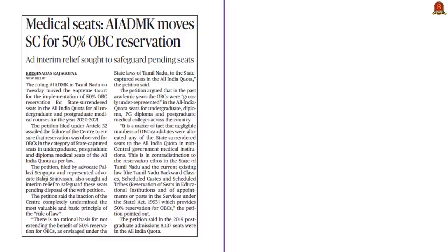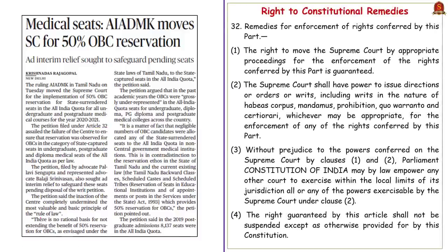The ruling party in Tamil Nadu petitioned the Supreme Court that the central government failed to ensure OBC reservation under the all-India quota category. This petition was filed under Article 32 of the Indian Constitution, which speaks about remedies for enforcement of fundamental rights — the right to constitutional remedies. Anyone can move the Supreme Court for enforcing fundamental rights, and the court has the power to issue directions, orders, or writs including habeas corpus, mandamus, prohibition, quo warranto, and certiorari.